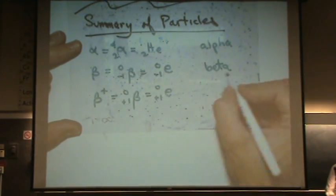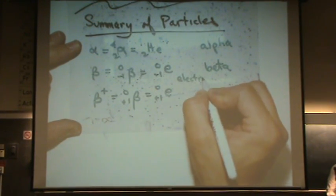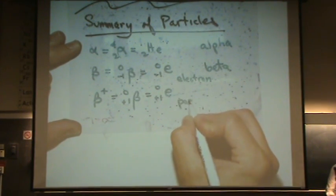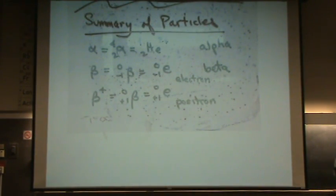But the top one is an electron, and the bottom one is a positron. So they're both beta particles, though.